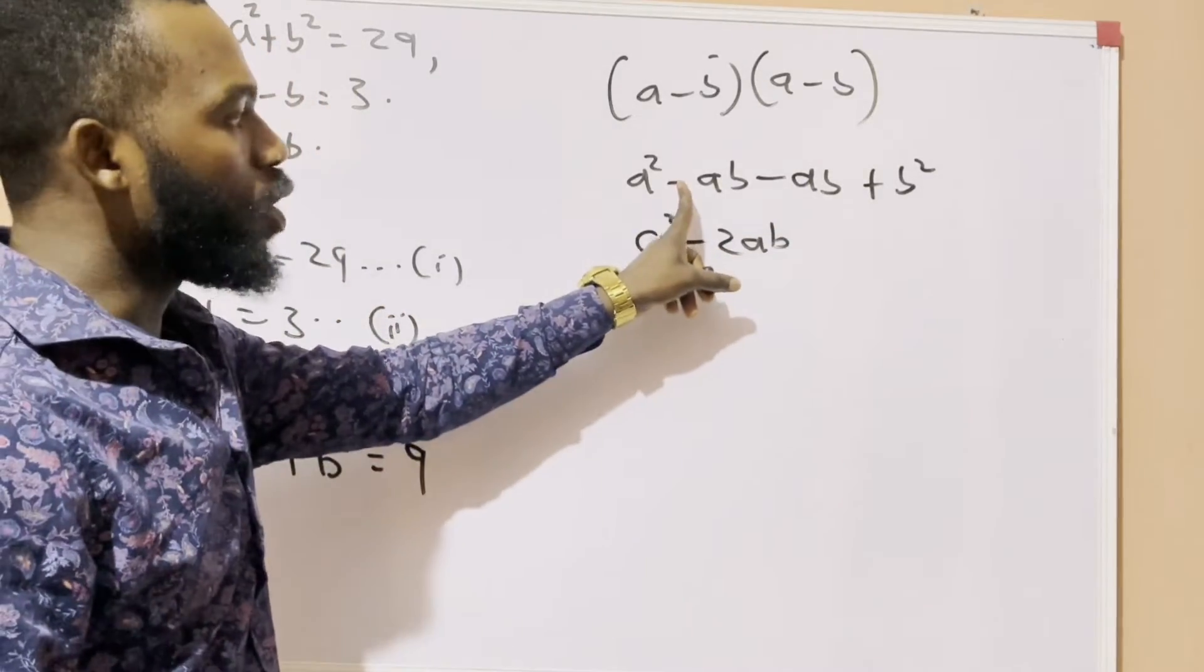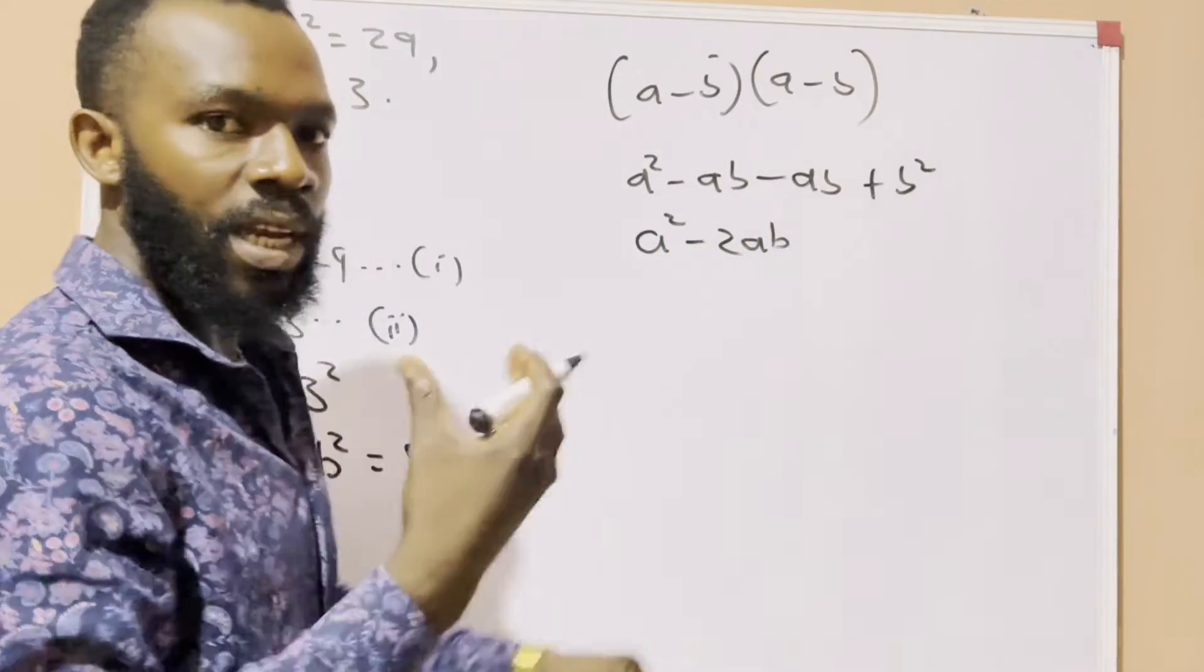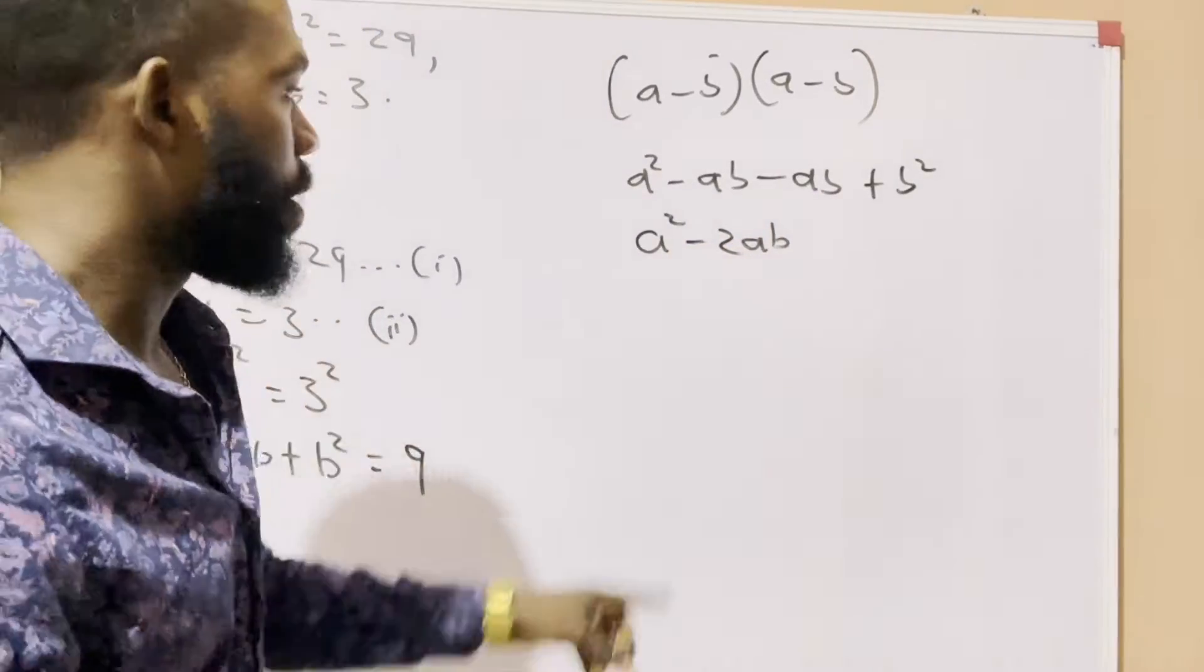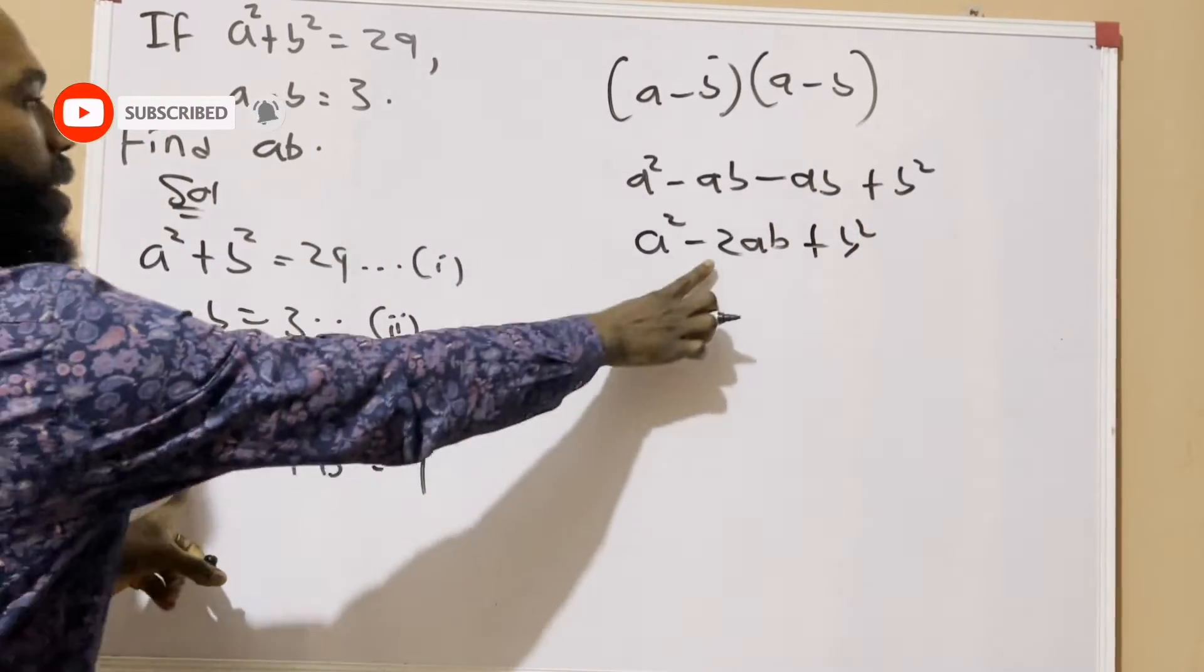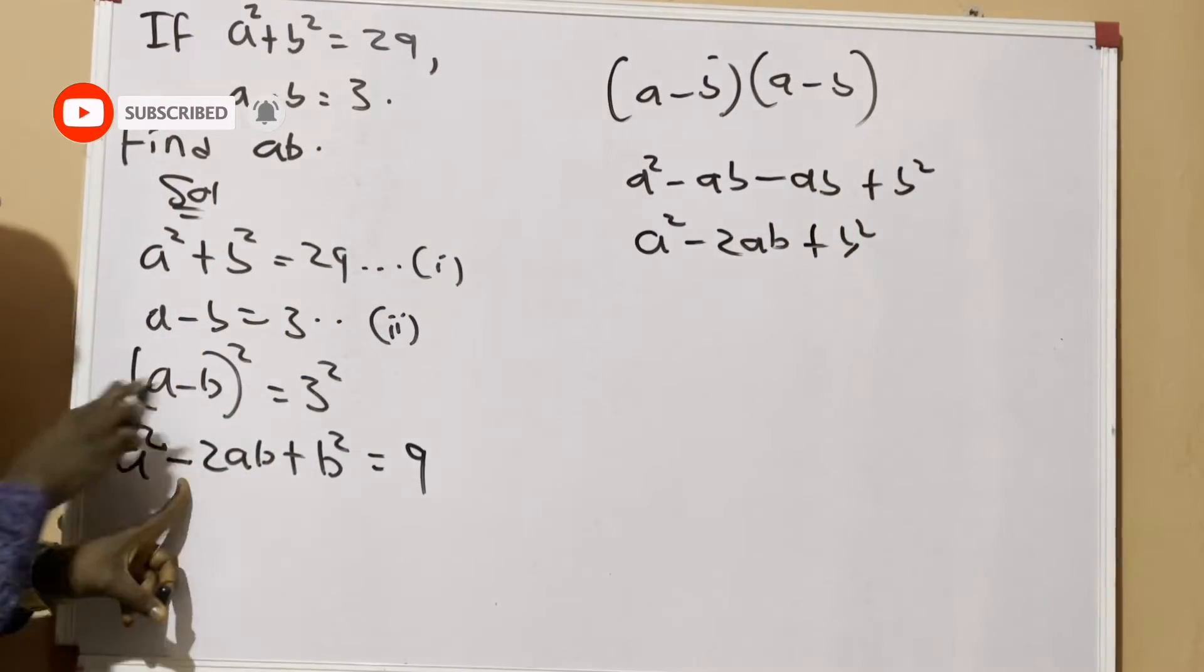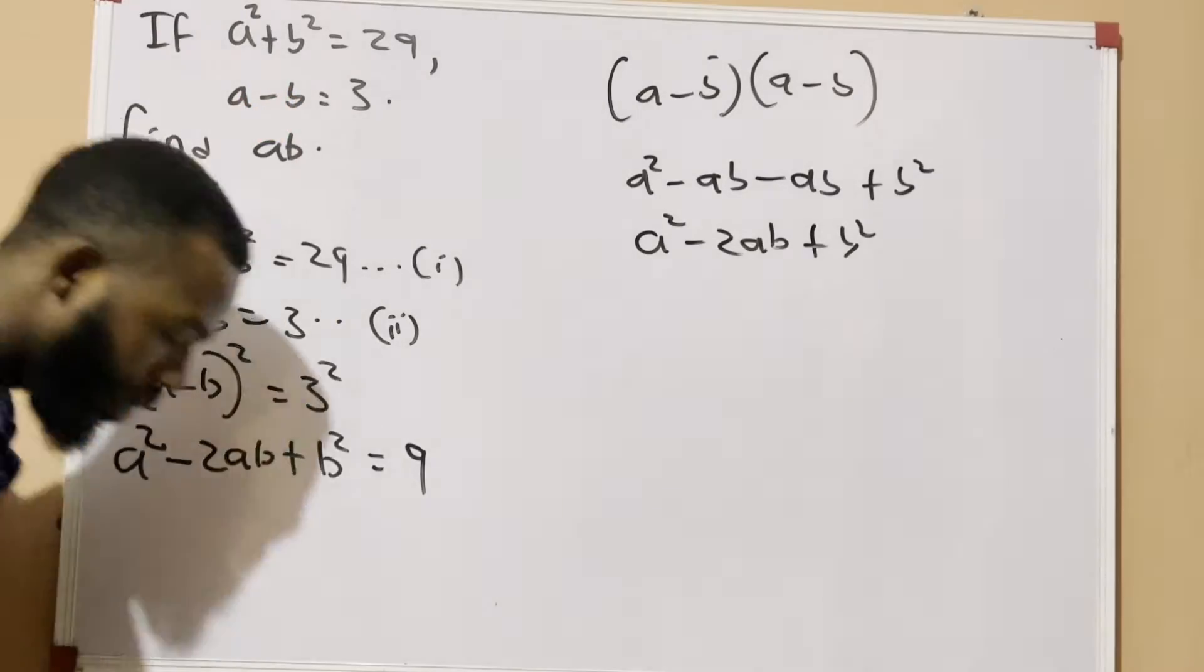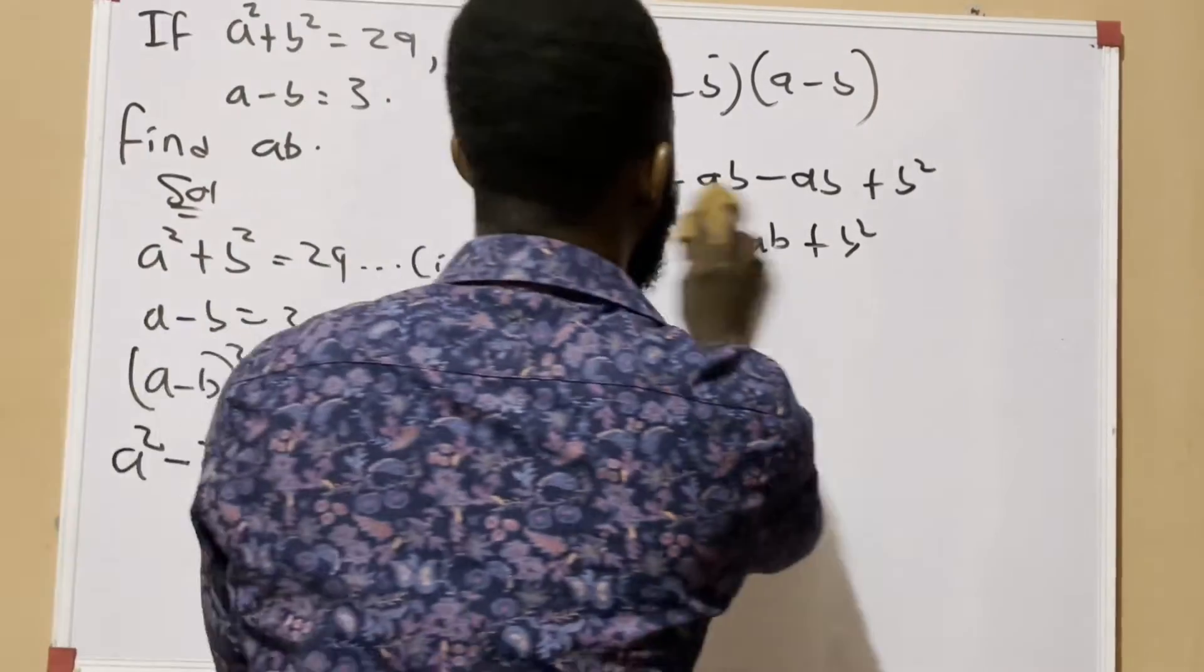When you are adding -ab and -ab, it means you are adding 2ab. So it becomes -2ab plus b². You see the same answer that I got here, but here I used Pascal's triangle. Now let us proceed.